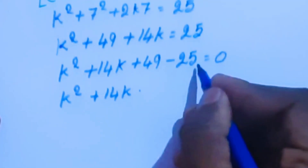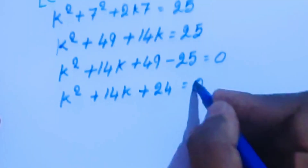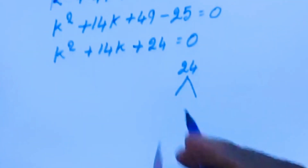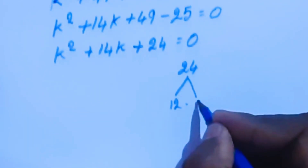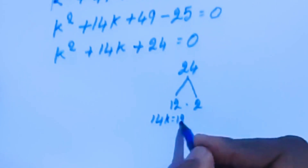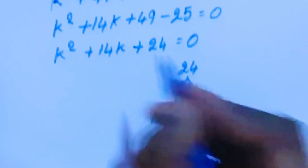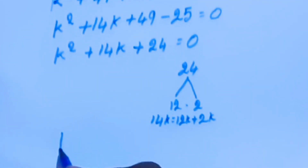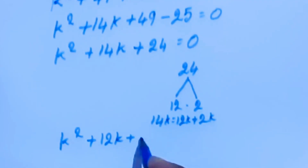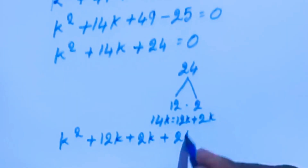plus 49 minus 25 equal to 0. Now we have k squared plus 14k, and 49 minus 25 is 24, so k squared plus 14k plus 24 equal to 0. Here 24 can be written as 12 times 2, and 14k can be written as 12k plus 2k.